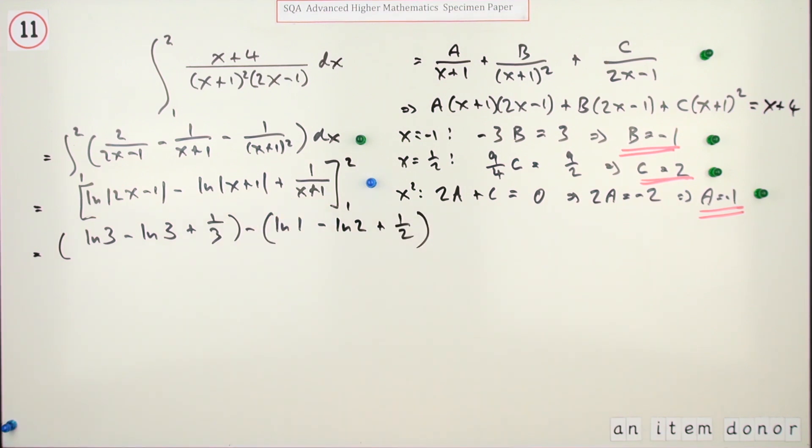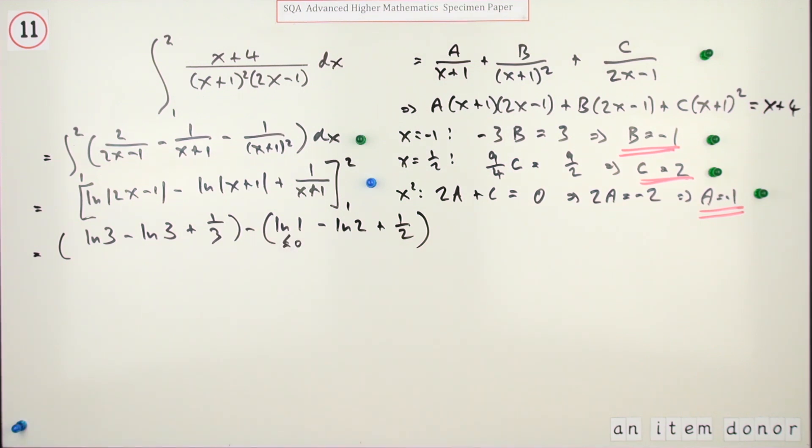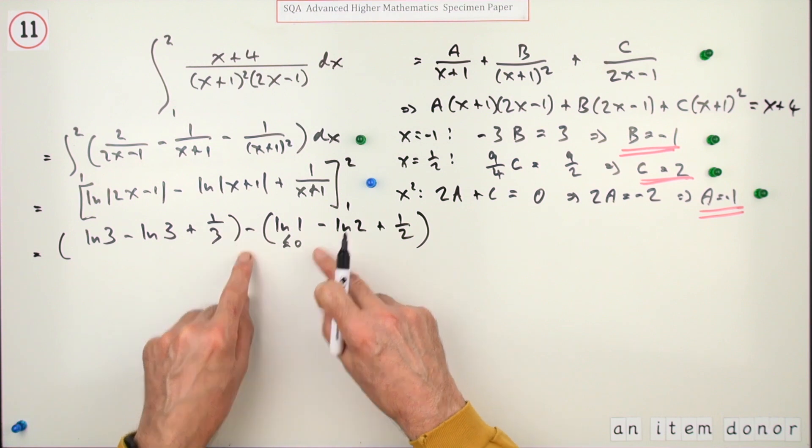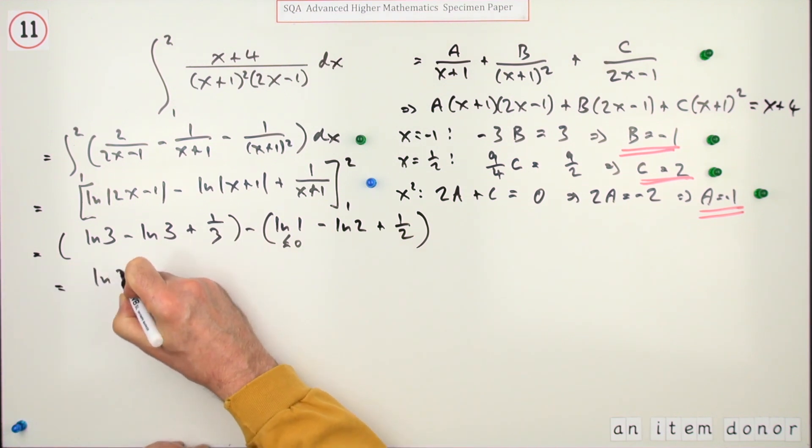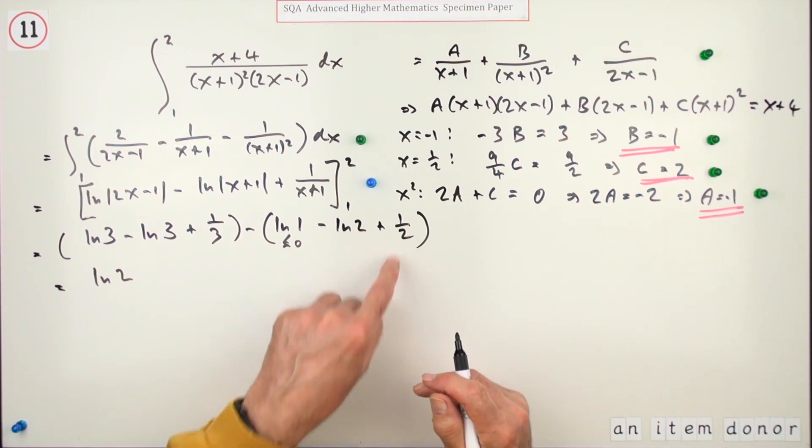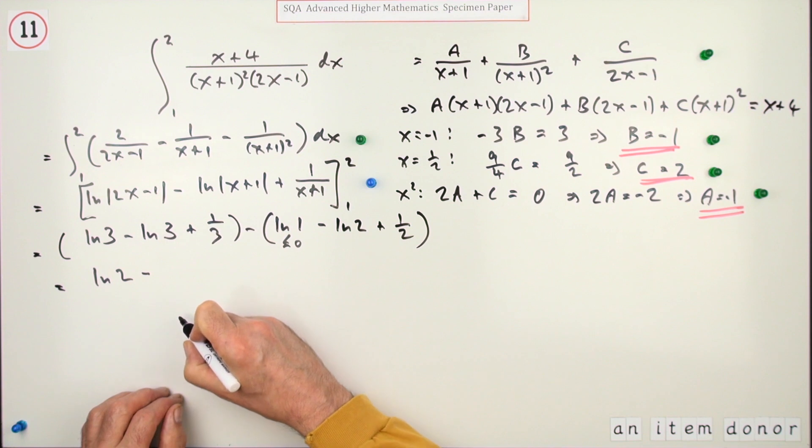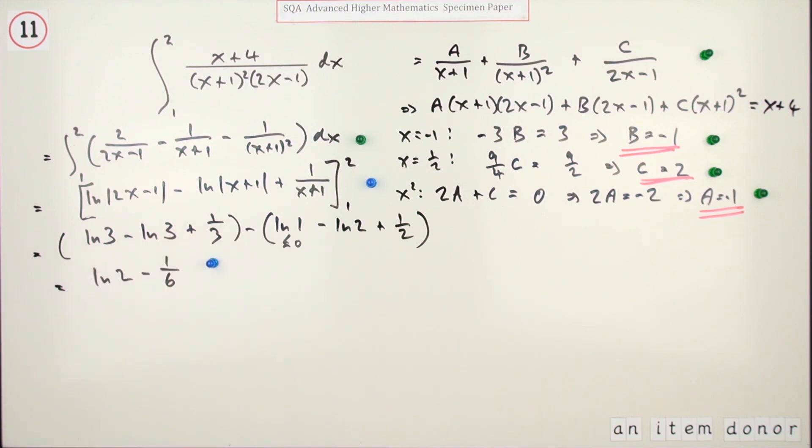There's only one mark left now. Log 1 is just equal to zero; they cancel. So I've only got a log term and a pair of fractions that can go together. That log term, subtract a negative, is going to be ln 2. The other part will be 1/3 take away 1/2. A third take away a half, because a half is bigger than a third, minus 1/6. And that's the last mark.